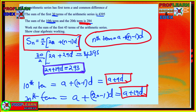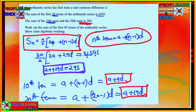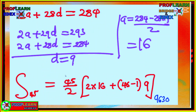We are also told the sum of the 10th term and the 20th term equals 284. Using the nth term formula, the 10th term is a + 9d and the 20th term is a + 19d. Adding them gives 284, forming our second simultaneous equation. Solving both simultaneously, we get d = 9 and a = 16.